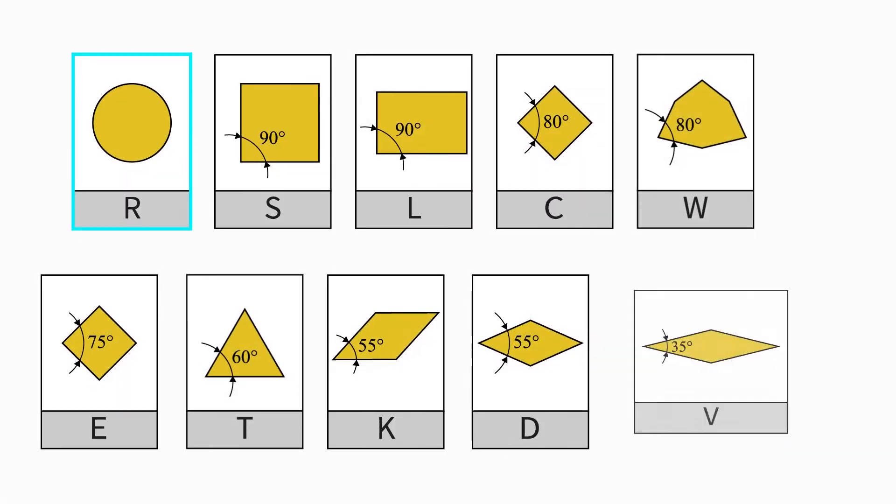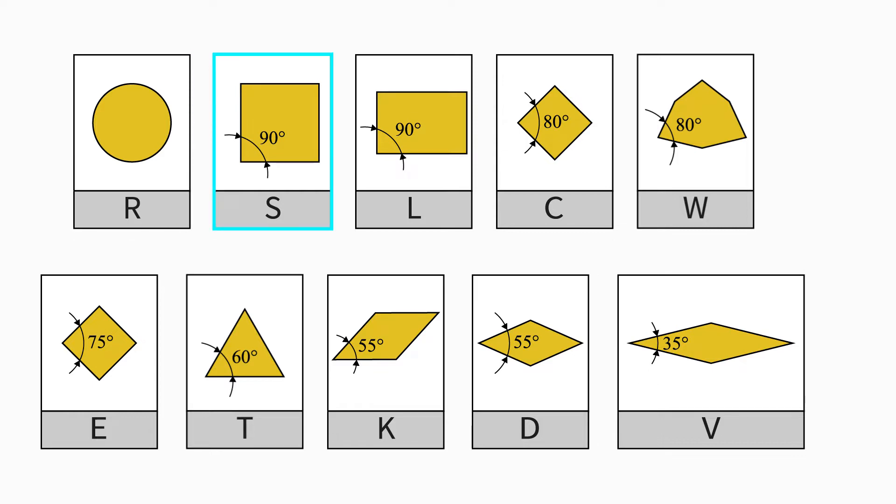R stands for round. S stands for square. L is a rectangular insert. C, as we said before, is a rhomboidal insert with an angle of 80 degrees. W is also a rhomboidal insert with an angle between the cutting edges of 80 degrees. This is followed by another rhomboidal shape, but in this case with an angle of 75 degrees. Then the triangular T insert with an angle of 60 degrees. Then a trapezoidal one, again at 55 degrees. And finally, the last two rhomboidal ones, D and V, which have an angle of 55 degrees and 35 degrees.